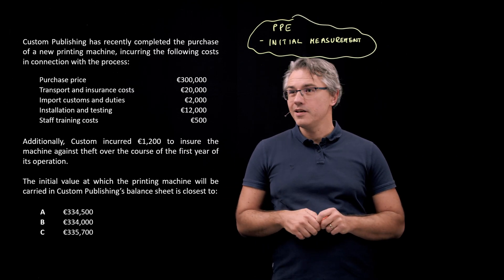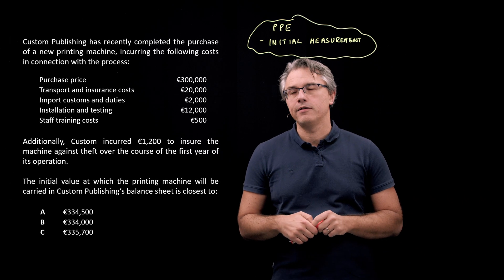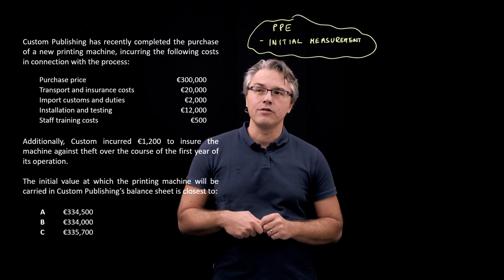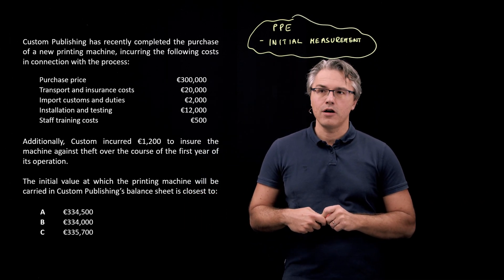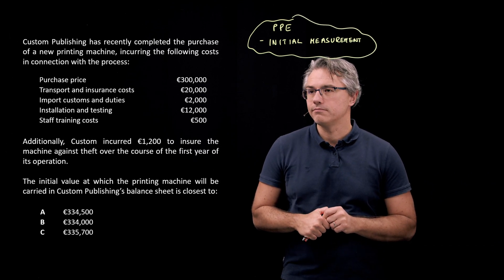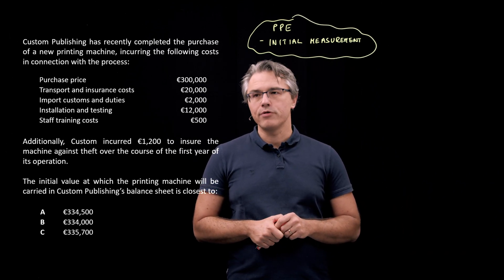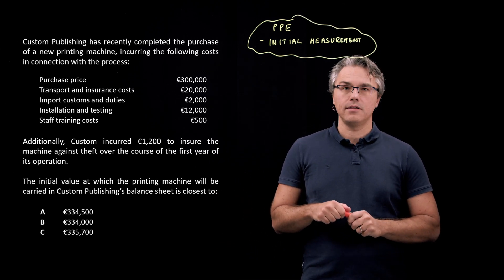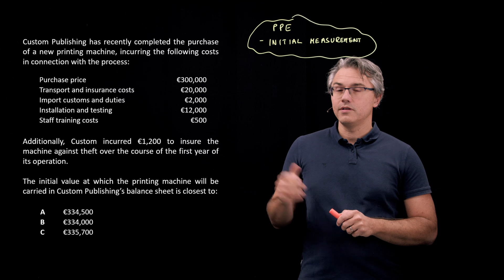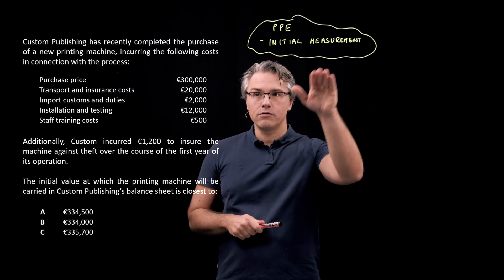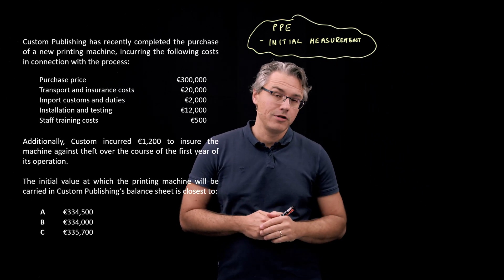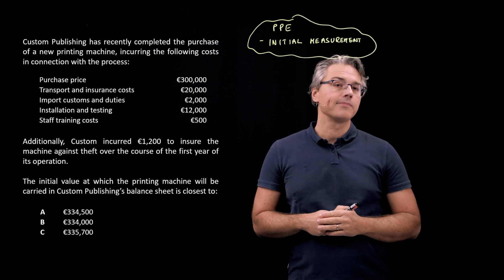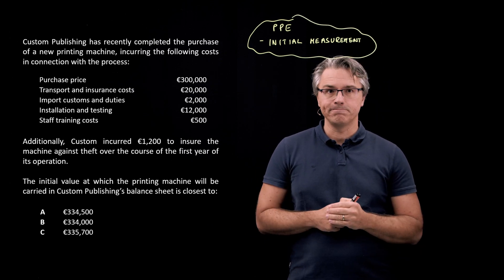And additionally Custom, that's the company, incurred 1,200 euro to insure the machine against theft over the course of the first year of its operation. The initial value at which the printing machine will be carried in Custom Publishing's balance sheet is closest to. So obviously the question relates to the initial measurement, the value at which the machine will enter the company's balance sheet or assets.